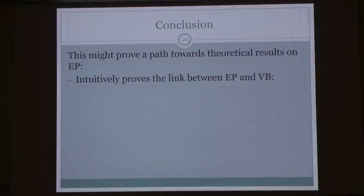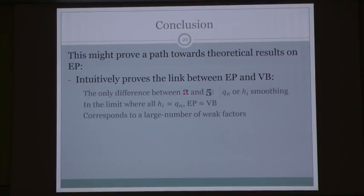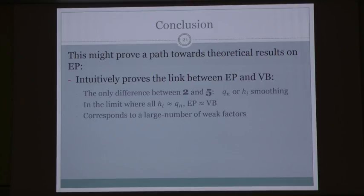This might also provide a path toward empirical improvements of EP by borrowing ideas from the optimization community, and toward new theoretical results on EP. For example, people have assumed a link between EP and VB — that they become asymptotically equal in some limits. Now we can understand this painlessly: the only difference between algorithms 2 and 5 is smoothing with a single Gaussian versus a cloud of hybrid approximations. When those become asymptotically equal — which happens when there are many weak factors — EP and VB are approximately equal.